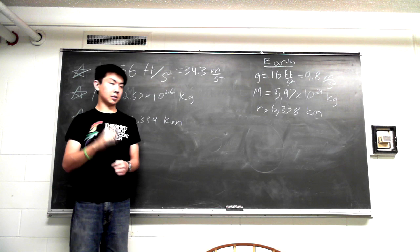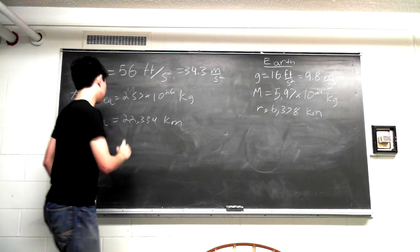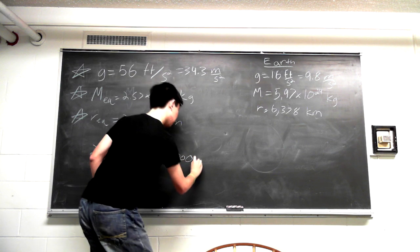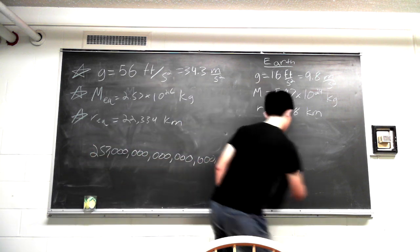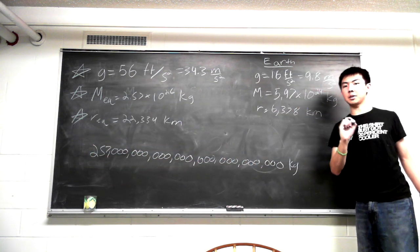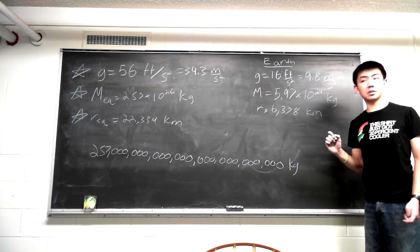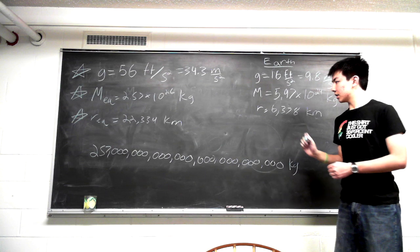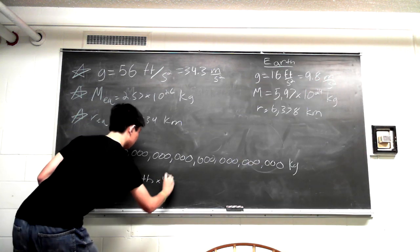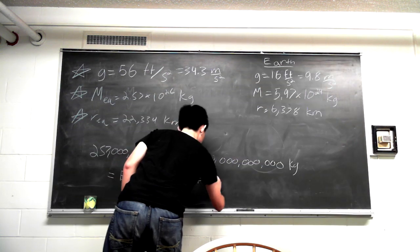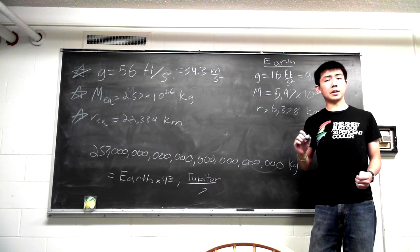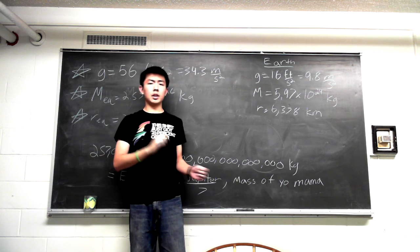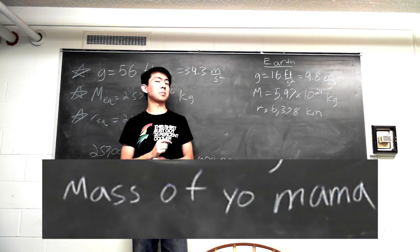Now, the mass of Equestria is about 257 trillion trillion kilograms. That's a lot of zeros. It's 24 to be exact. Now, this is equal to 43 times the mass of the Earth, a seventh of the mass of Jupiter, and about the mass of your mother.